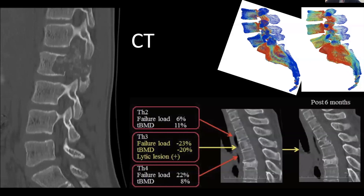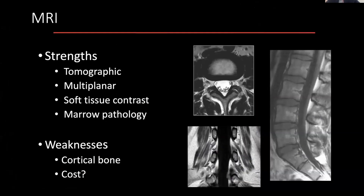In addition, we can use software to contribute to our decision-making in terms of whether we think a particular fracture is likely to occur if it hasn't already, or whether you're likely to have additional kyphosis going forward. That's typically done using CT data and proprietary software.